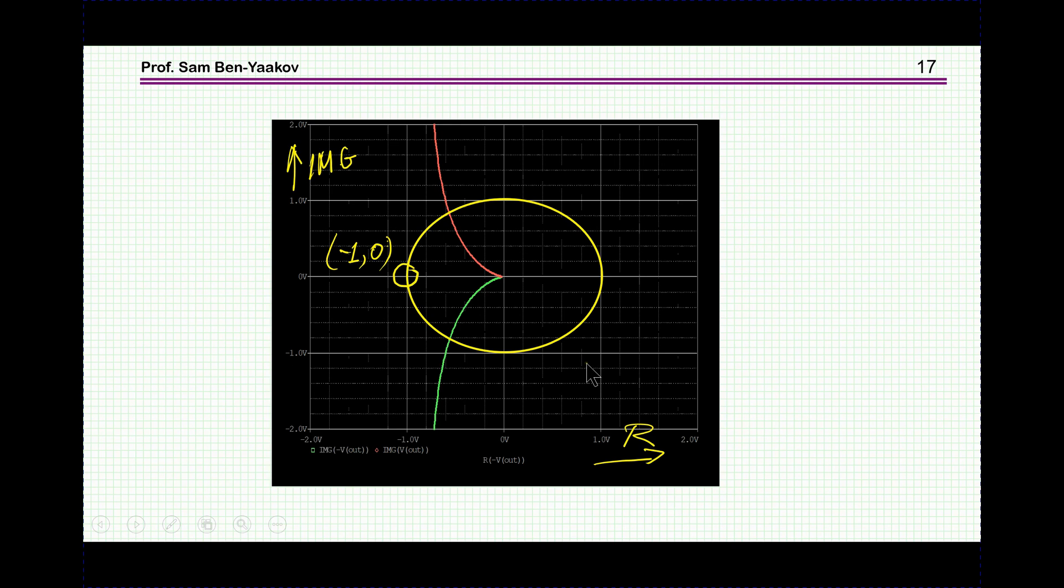So here it is very simple we got the Nyquist we have all that we need. Obviously this would be the phase although it's easier on the Bode plot to see of course the phase margin rather than here you have to measure it. In the Bode plot you see it immediately.